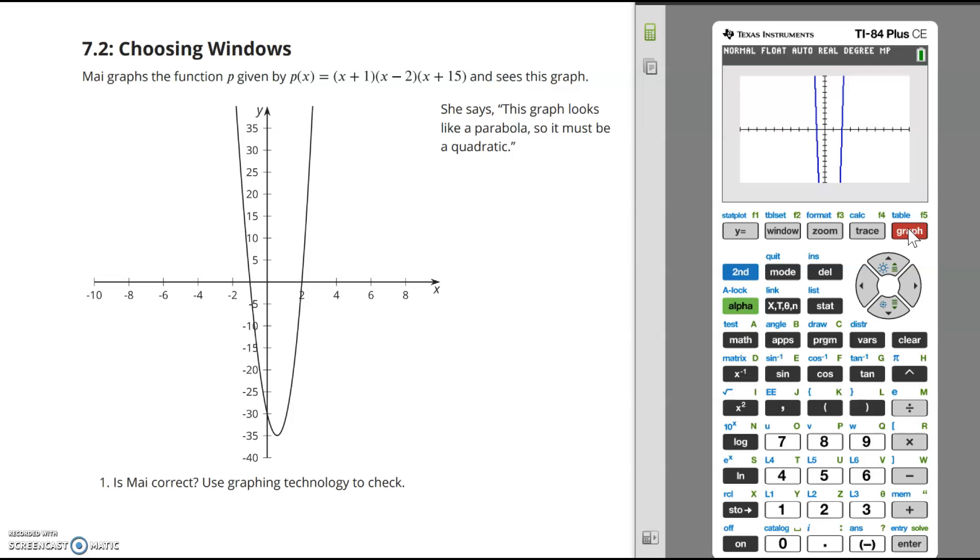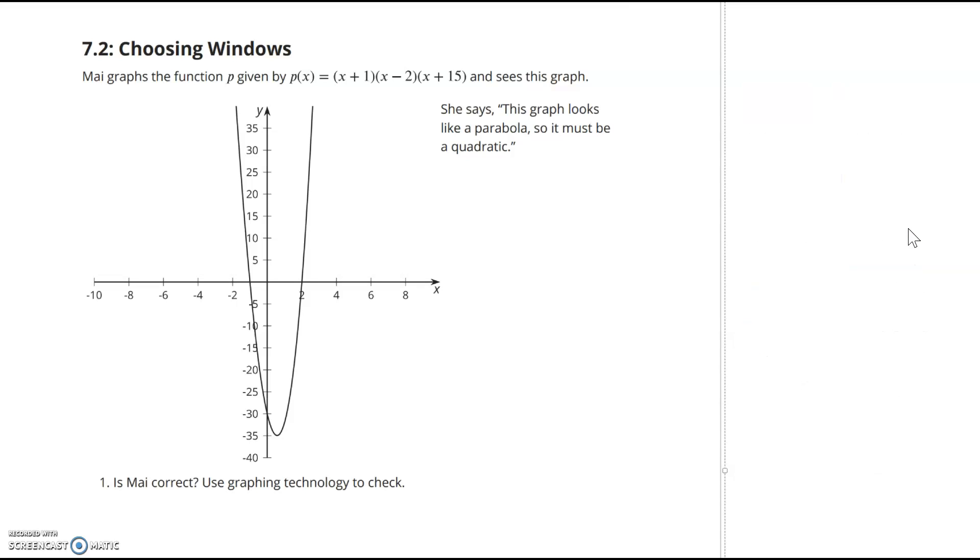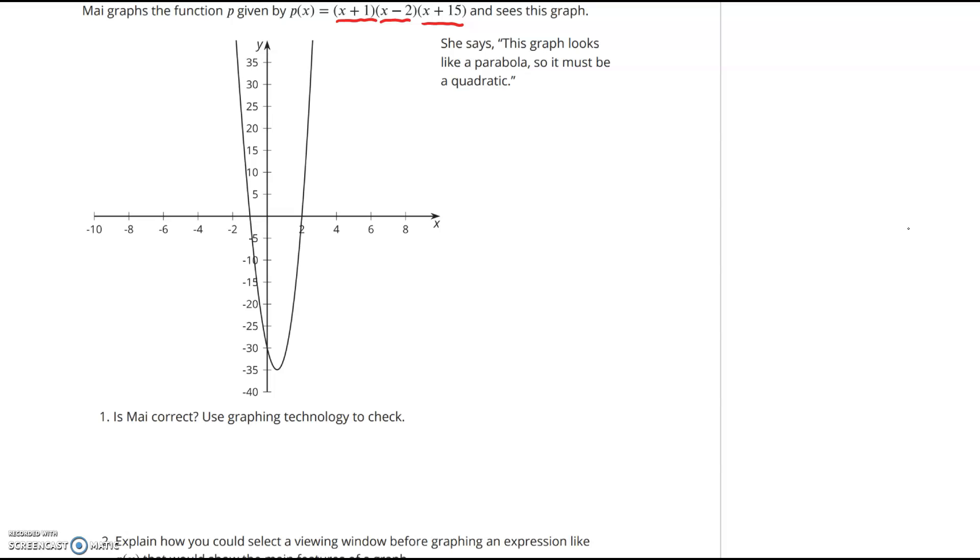It appears as though May is correct, but we have to be very careful. I would say not quite so fast. What I want you to notice here is notice that there are one, two, three factors involved in this function. Therefore, I would expect to see three zeros or three x-intercepts. So, is May correct? I would say no. There should be three x-intercepts.